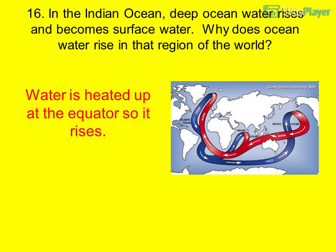Question 16: In the Indian Ocean, deep ocean water rises and becomes surface water. Why does ocean water rise in that region? Water is heated up at the equator, so it rises.